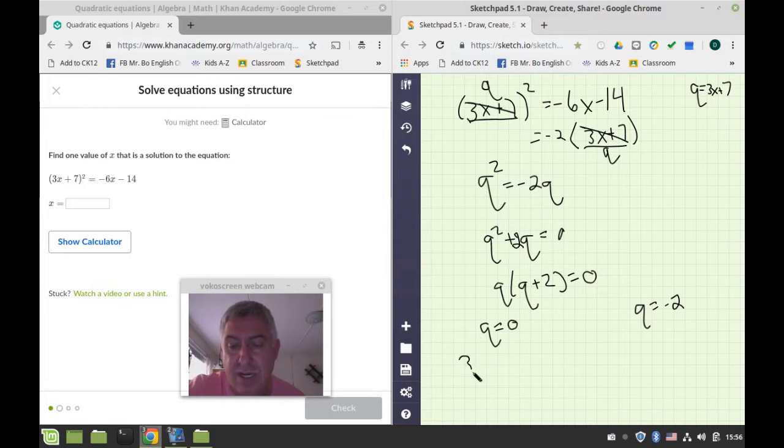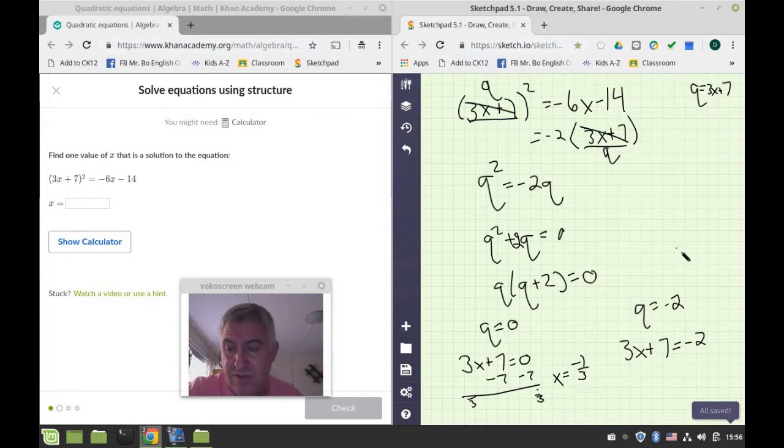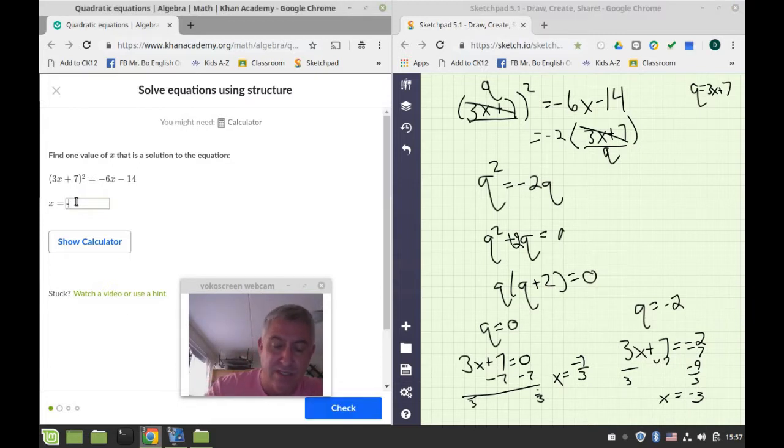So instead of q, I'm going to write 3x plus 7 is equal to 0, or 3x plus 7 is equal to negative 2, and I've got minus 7 and divide by 3, and I've got x is equal to negative 7 thirds. Over here, I've got minus 7 and minus 7, I've got negative 9, and divide by 3, and divide by 3, and so I've got x is equal to negative 3. So I have x is equal to negative 7 thirds, or x is equal to negative 3, and it wants one value. I'm going to write negative 3, because that's the easy one to write here.